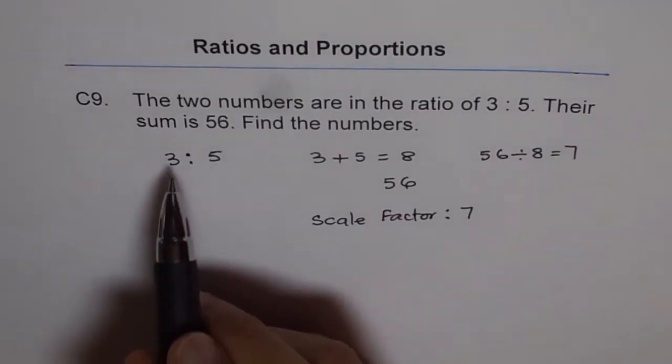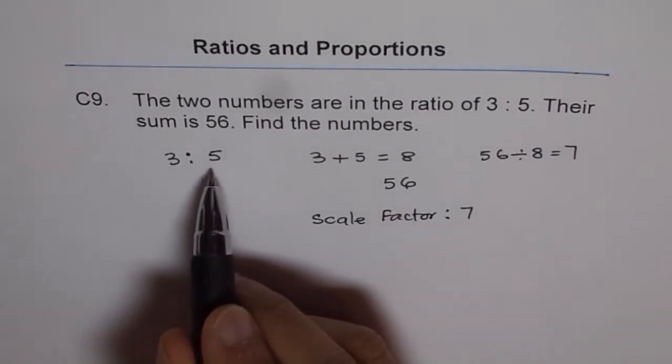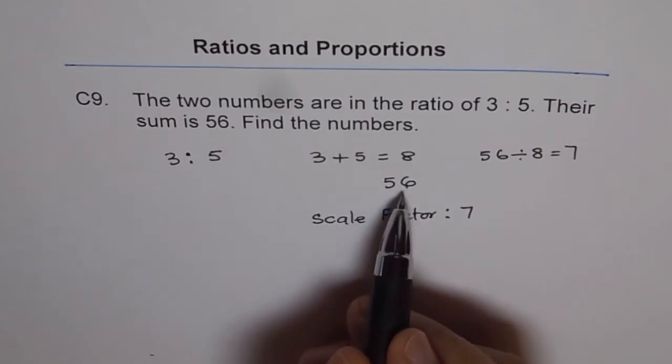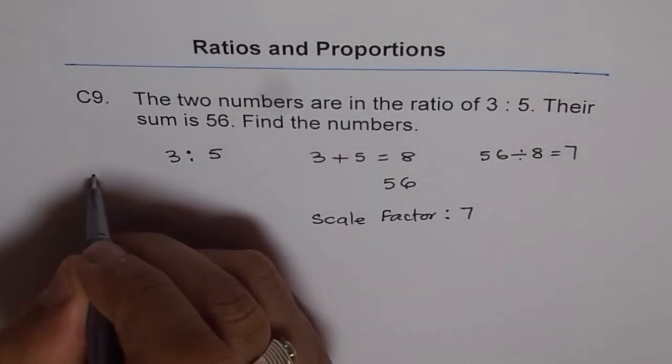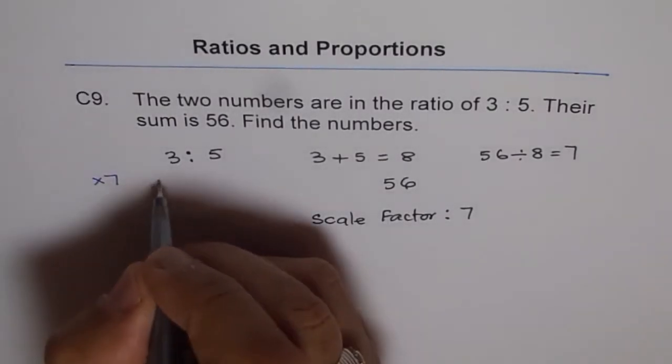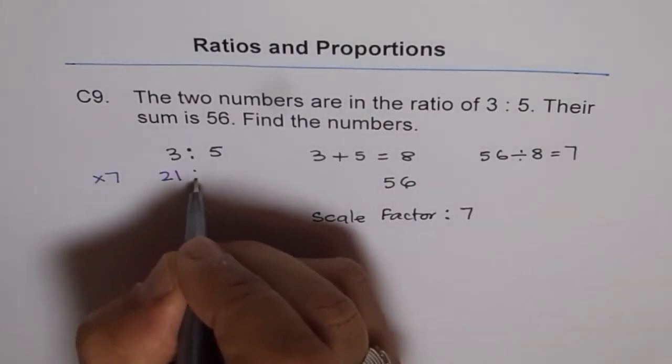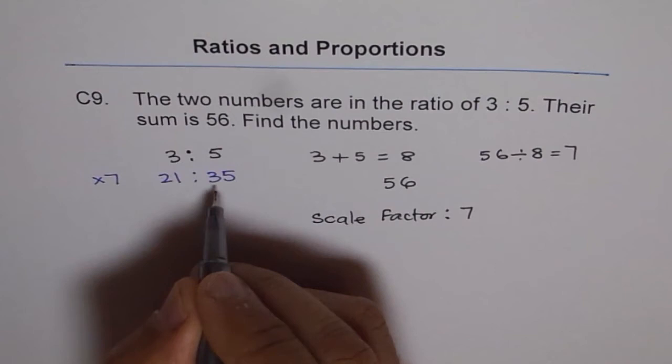That means the two numbers should be multiplied by 7, then their sum is going to be 56. So our scale factor is 7, we'll multiply both these numbers by 7. 7 times 3 is 21 and 7 times 5 is 35. So these are the two numbers.